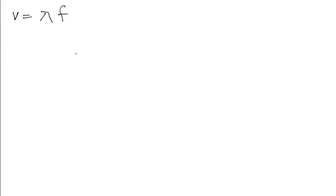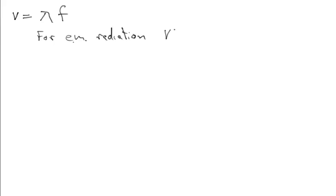That goes for any wave, including light. For electromagnetic radiation — I'm using the expression 'light' to mean all electromagnetic radiation — we'll single out the part to which our eyes are sensitive by calling it visible light. So light includes radio waves, x-rays, everything. For any kind of electromagnetic radiation, the speed of the wave is equal to c.